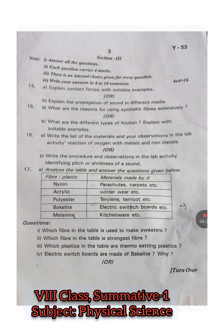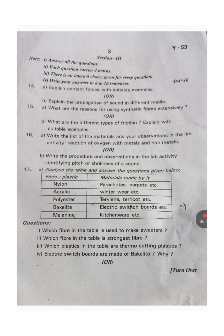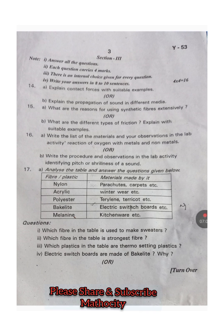Question 17: Analyze the table and answer the questions given below. This is an information skills question. The table gives fibers and plastics - nylon, acrylic, polyester, bakelite, melamine - and materials made from them such as parachutes, carpets, winter wear, terylene, terricot, electric switchboards, and kitchen ware. Questions: Which fiber in the table is used to make sweaters? Which fiber is the strongest fiber? Which plastics in the table are thermosetting plastics? Electric switchboards are made of bakelite - why? You have to write the reason.